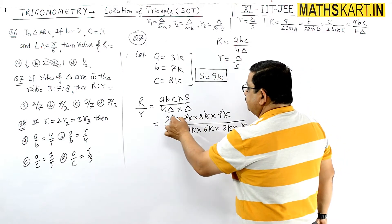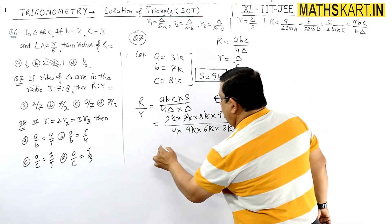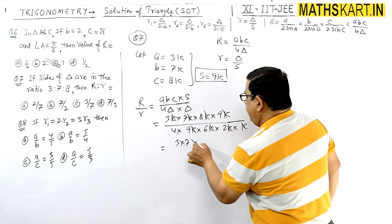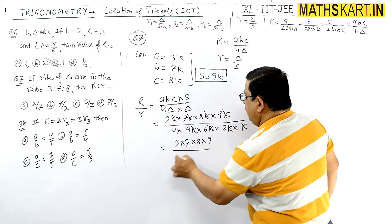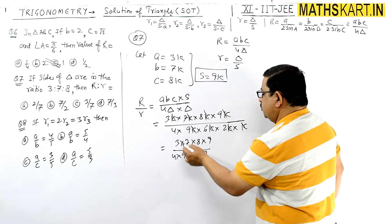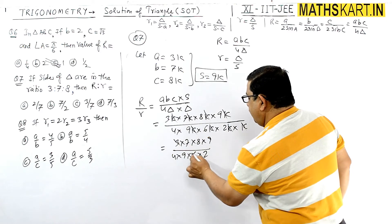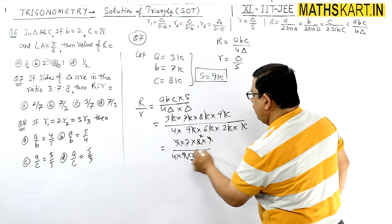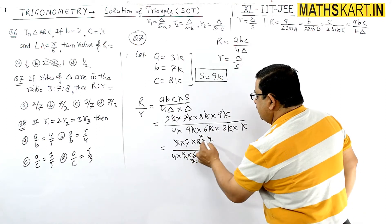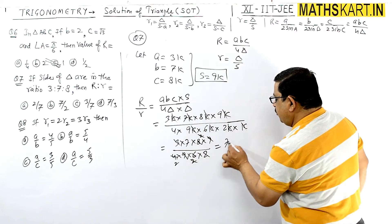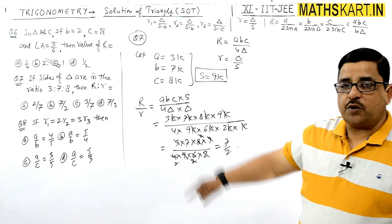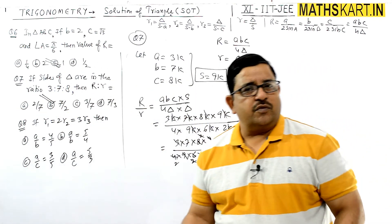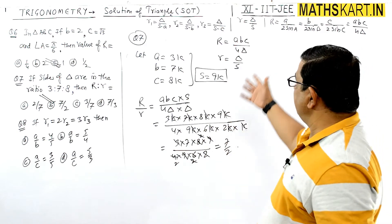k eliminate होने के बाद: R/r = (3 × 7 × 8 × 9) / (4 × 9 × 6 × 2). Simplifying: 9 cancels with 9, and remaining terms give 7/2. Answer is 7/2, option B is correct। बहुत ही आसान — खाली formula ढूंढने होते हैं।